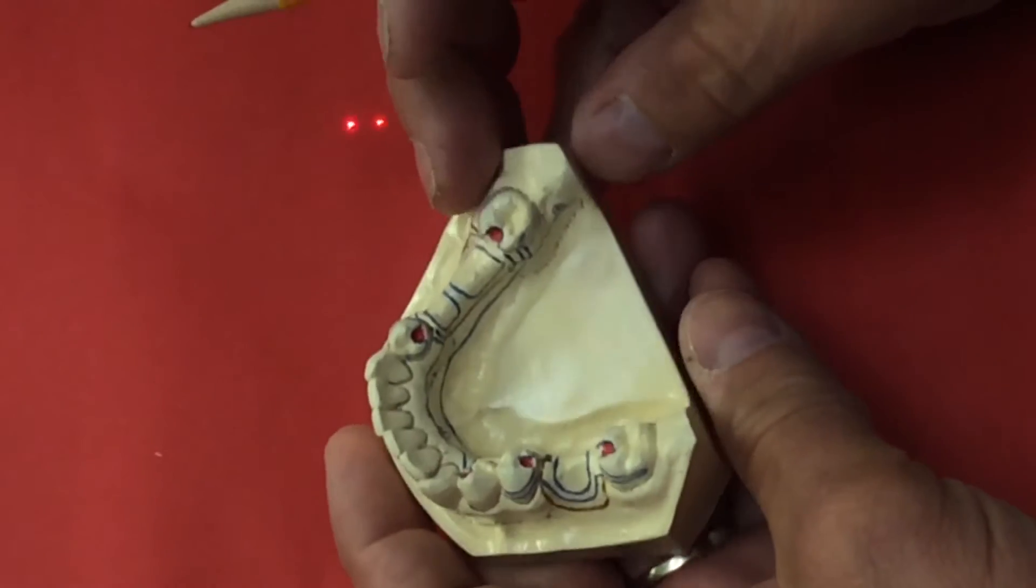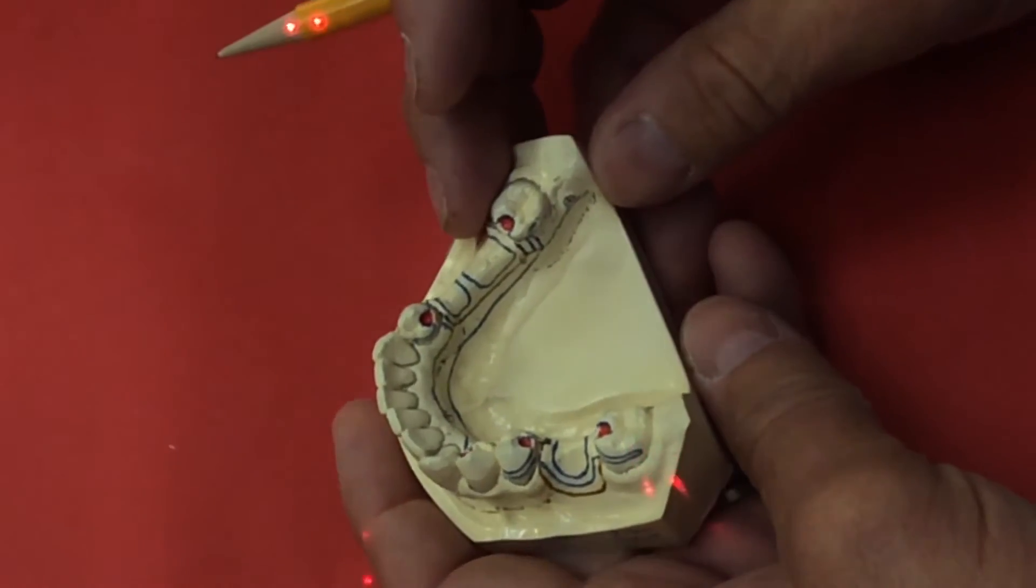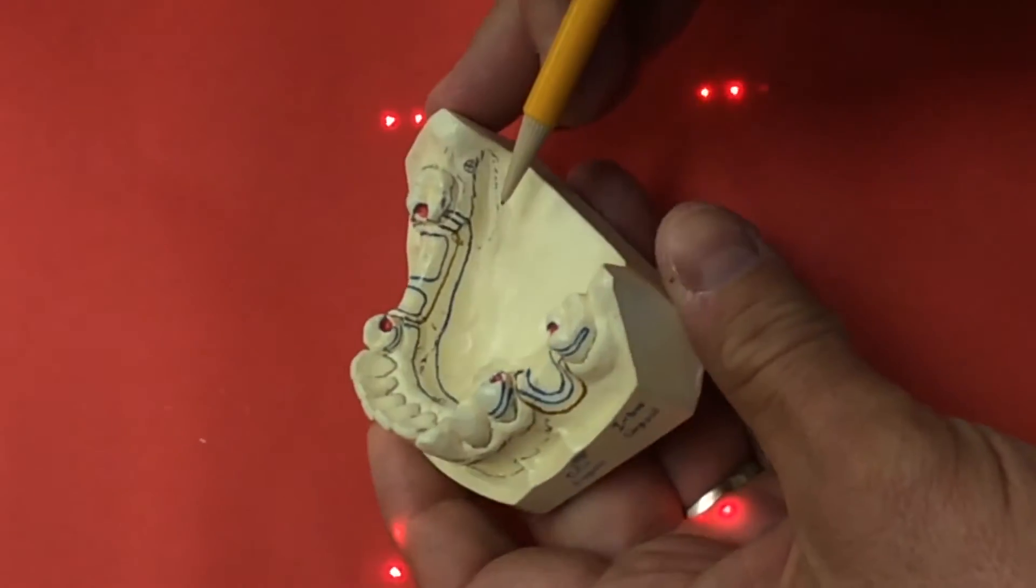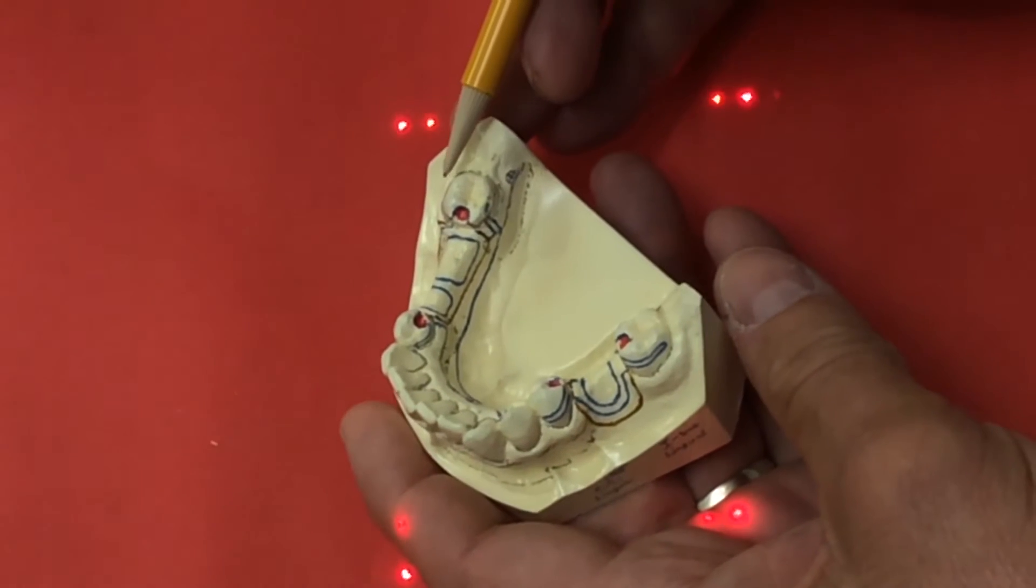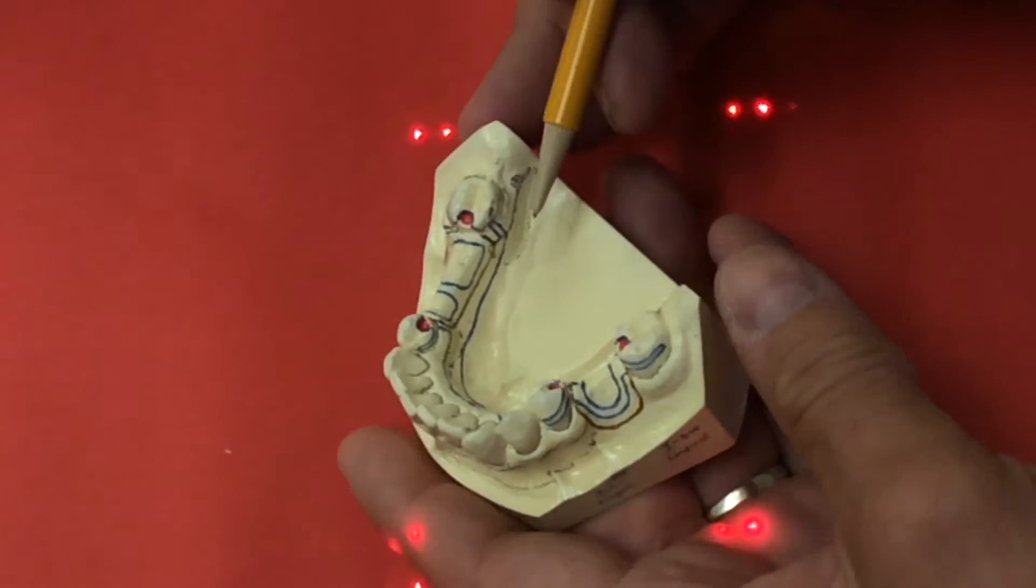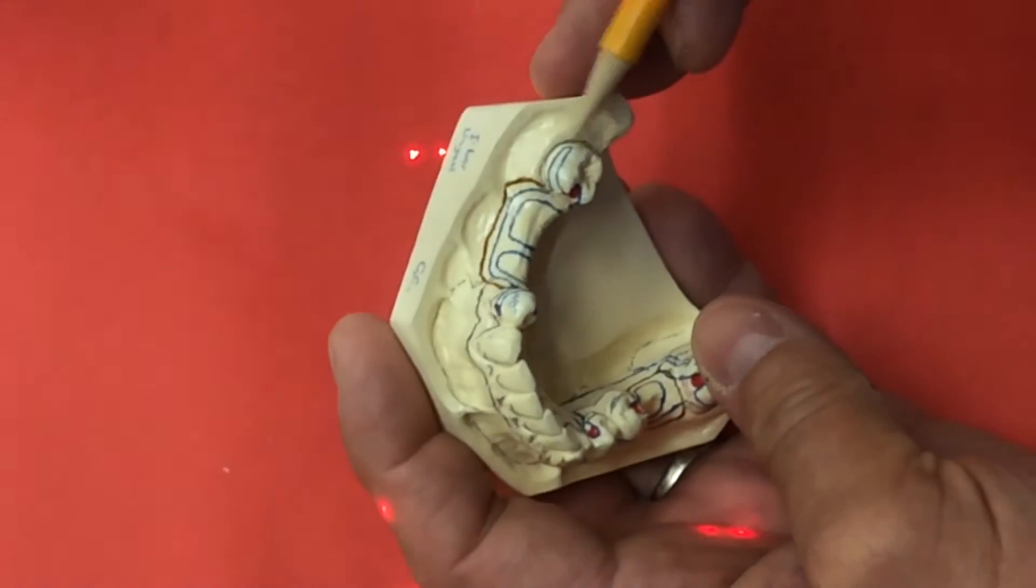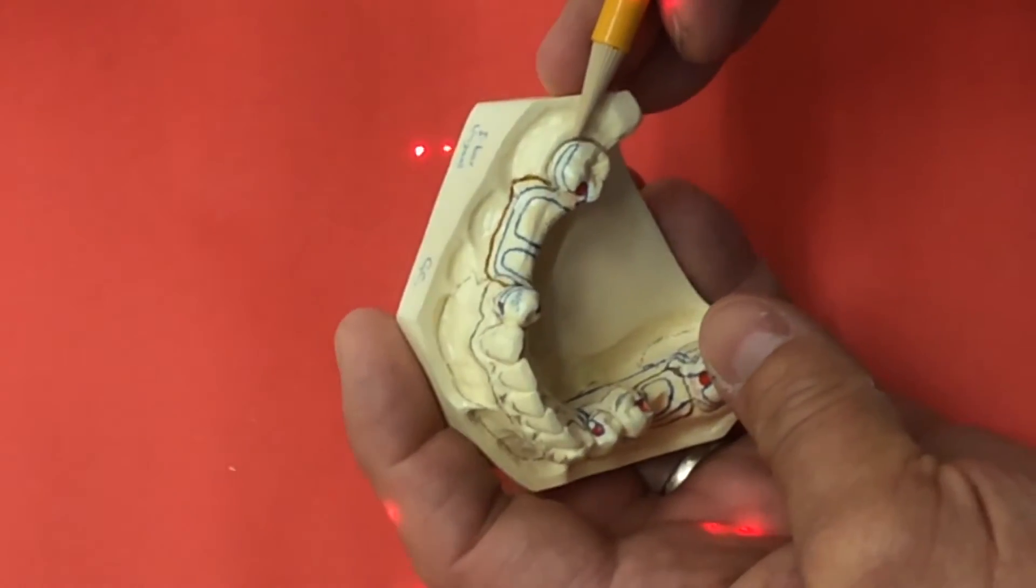If you want to use a buccal undercut, you're welcome to. You don't have to find the one on the lingual if you happen to have one on the buccal. Whichever side you find retention on, the opposite side is where you want to find reciprocation.